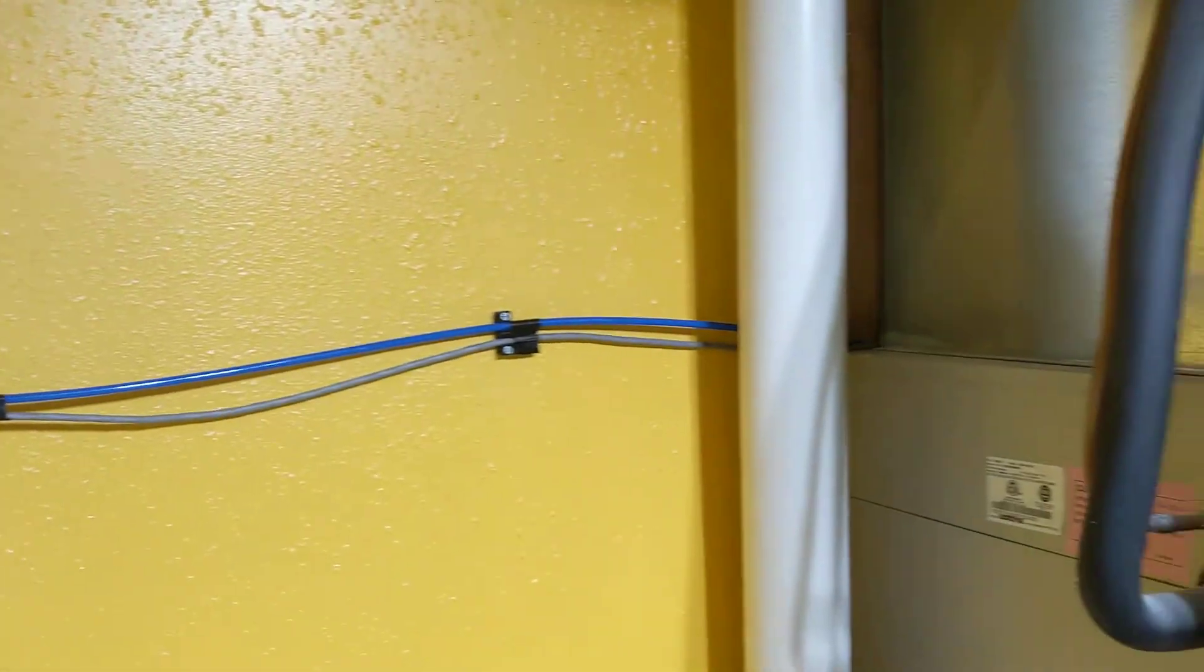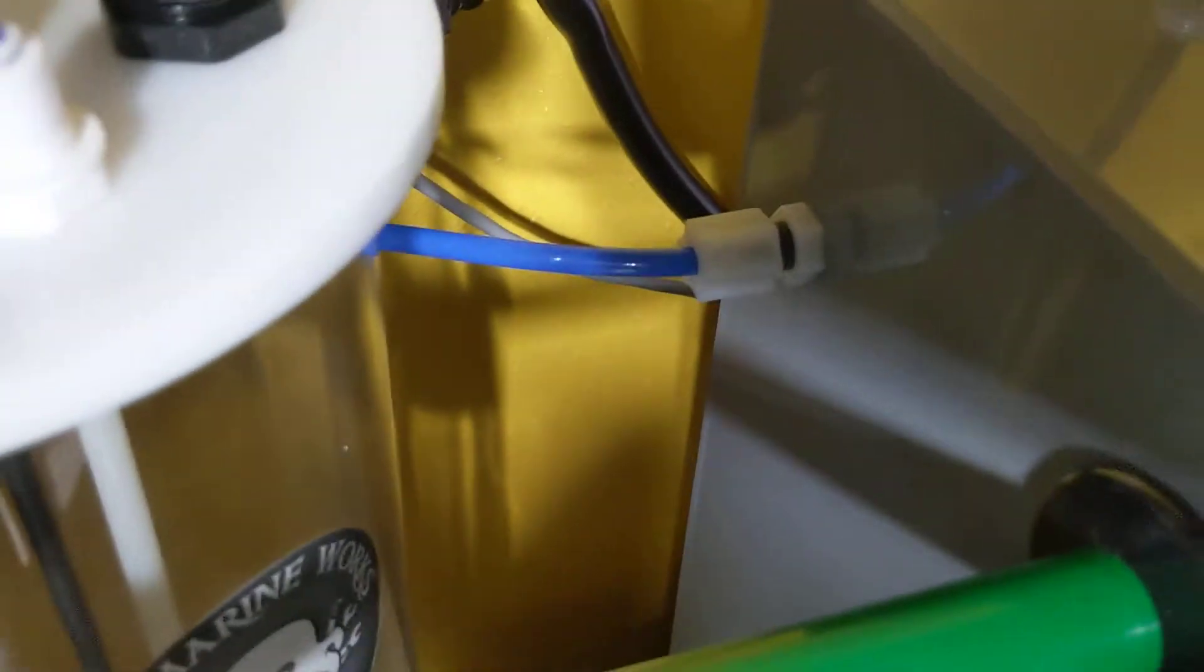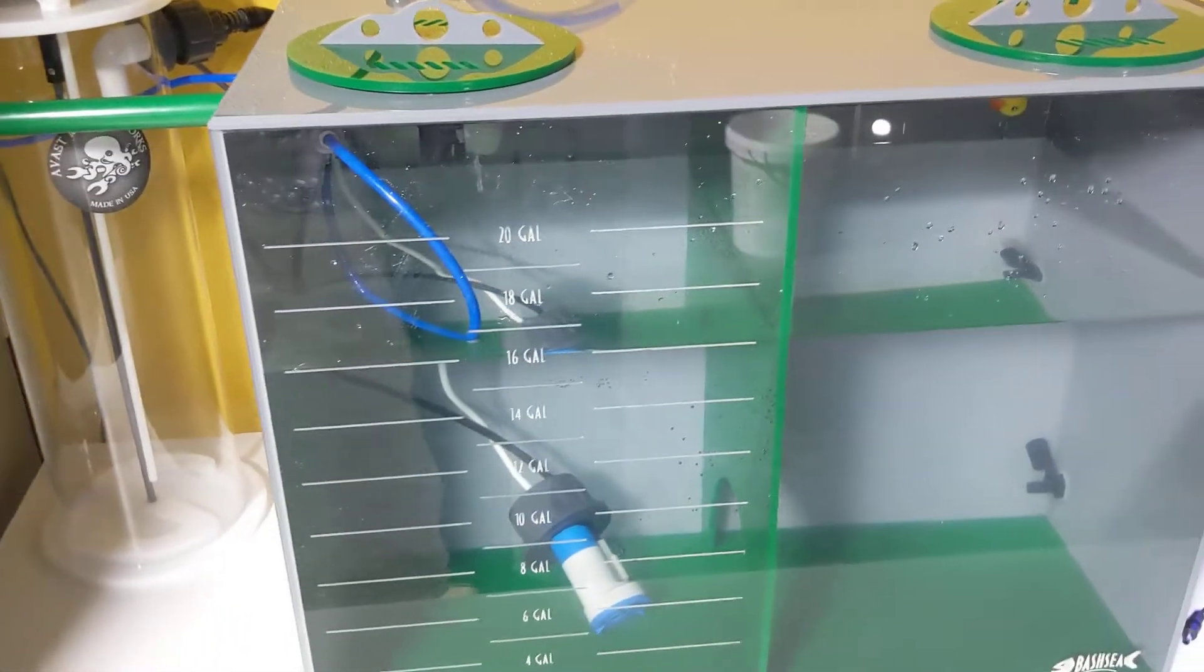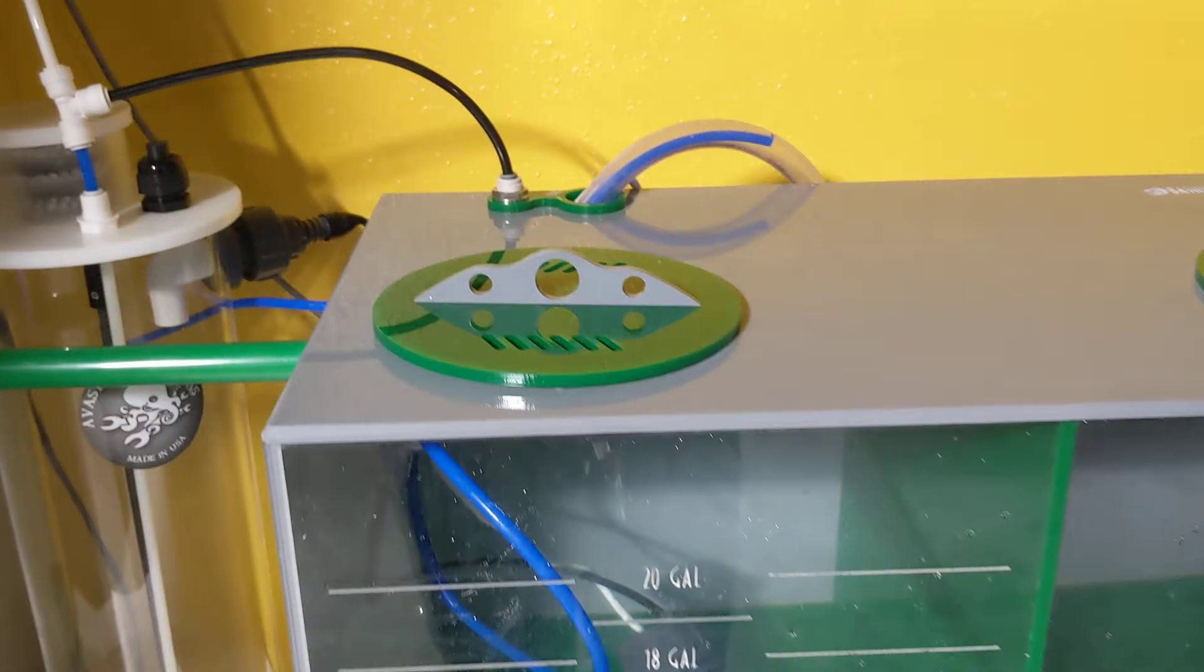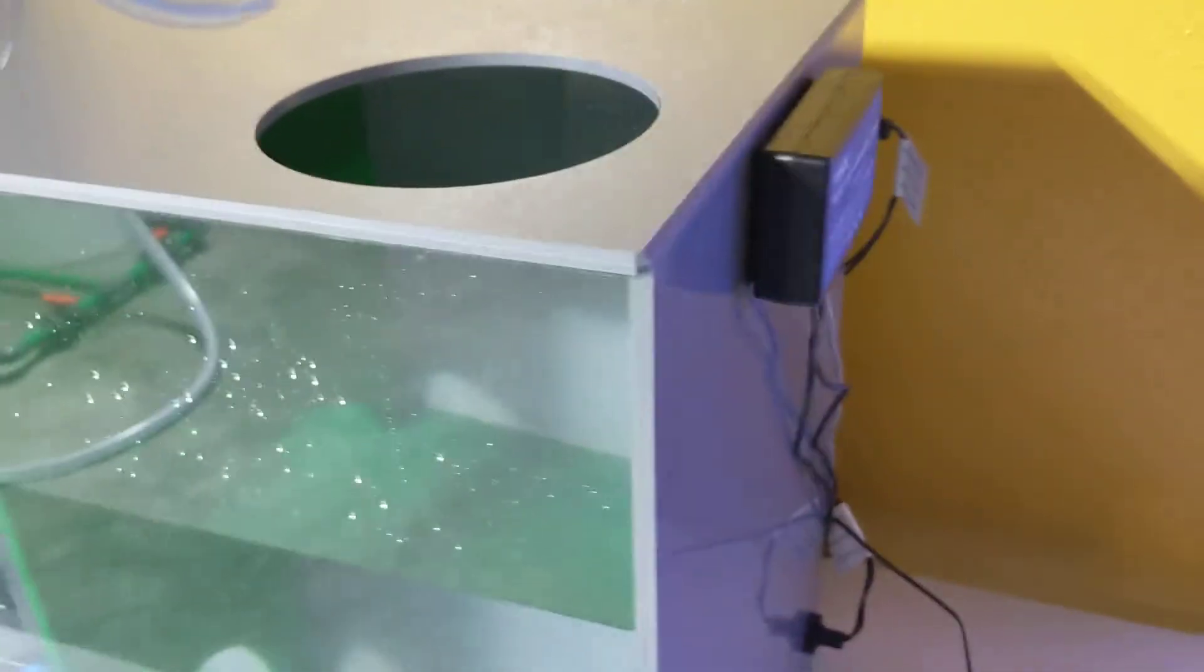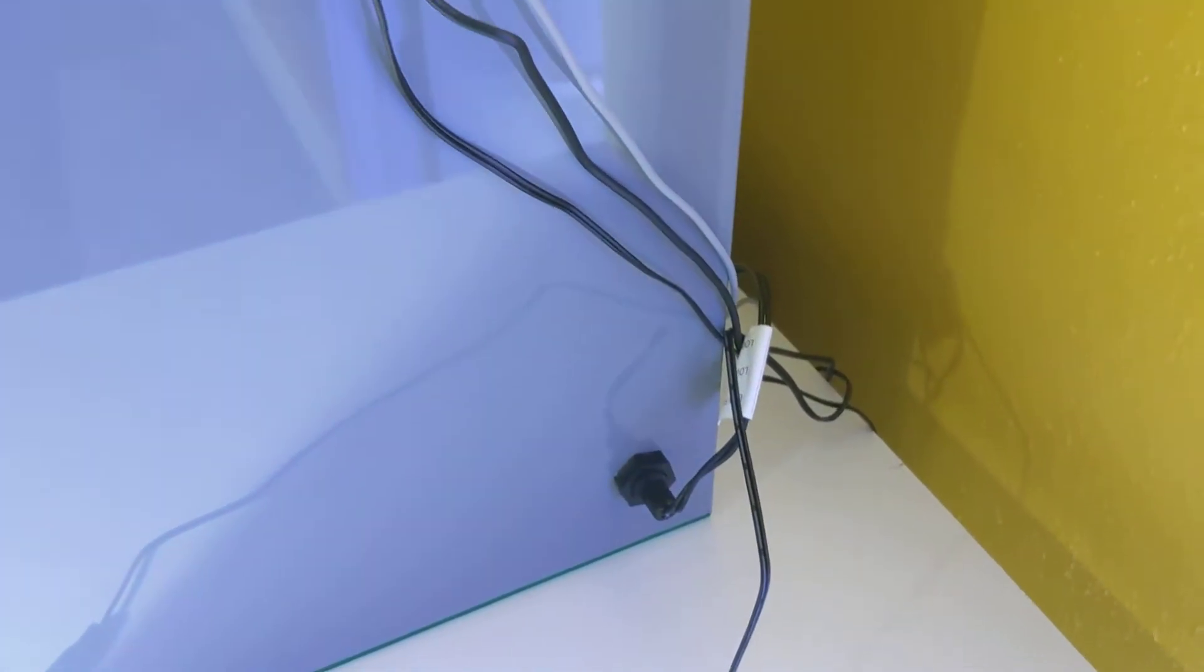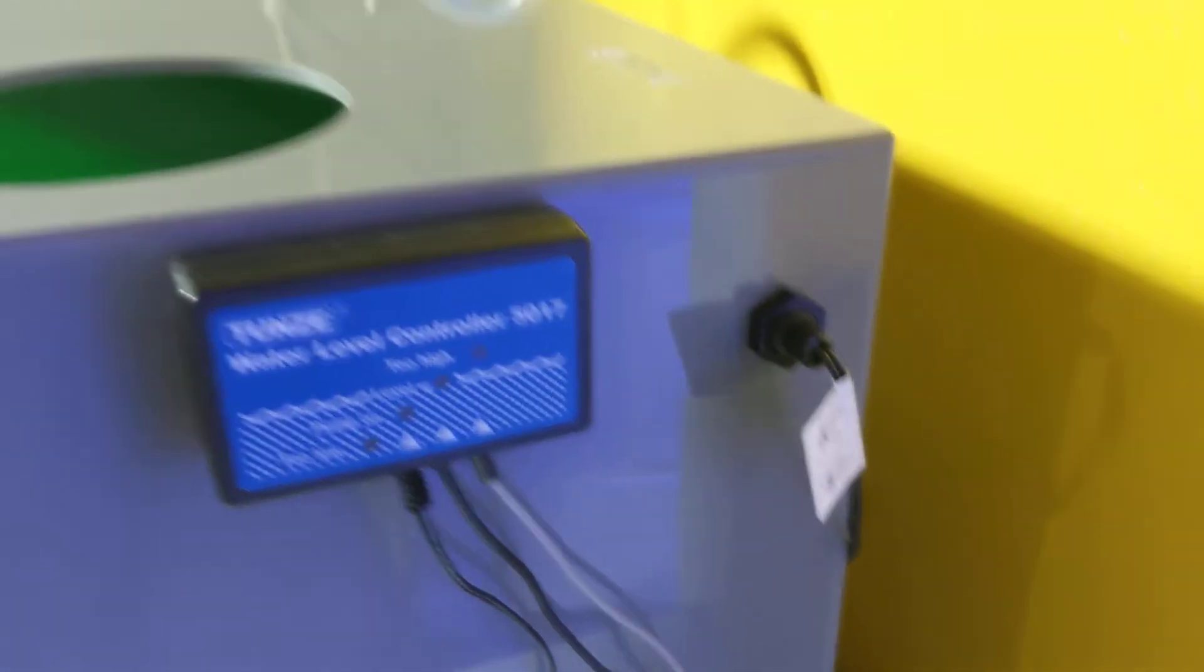So the line comes over and then goes into the side of my ATO. This is a custom ATO by Bashi. I designed this in 3D Autodesk Fusion. So what this does is here is a high and low level sensor. So when the low level sensor trips, it's going to call for water. And when the high level trips, it's going to deactivate the solenoid that I showed you on the wall earlier.